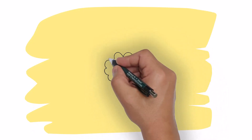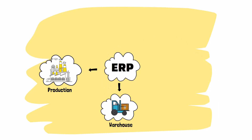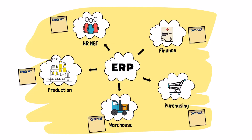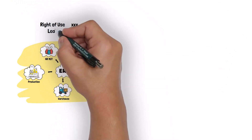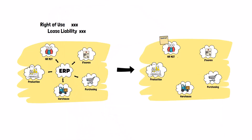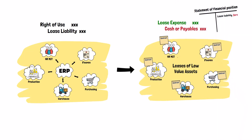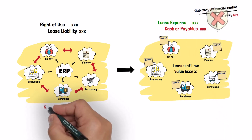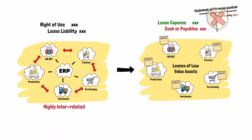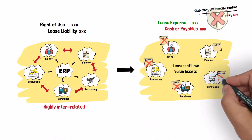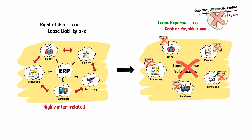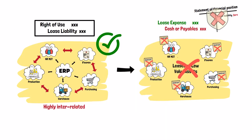A company might lease an asset like an ERP system. That system is composed of several modules, where the company leases each module separately. Each module has a low value on its own when new. So instead of recognizing a right-of-use for the whole system, the company chooses to account for the individual leases of these modules as leases of low value assets, thereby avoiding showing liabilities on the statement of financial position. The fourth condition blocks that attempt at hiding liabilities by stating that if these modules are highly dependent on, or highly interrelated with each other, then the individual leases cannot be accounted for as leases of low value assets. Instead, they should be accounted for as one lease for the whole system, with a right-of-use asset recognized on the statement of financial position.